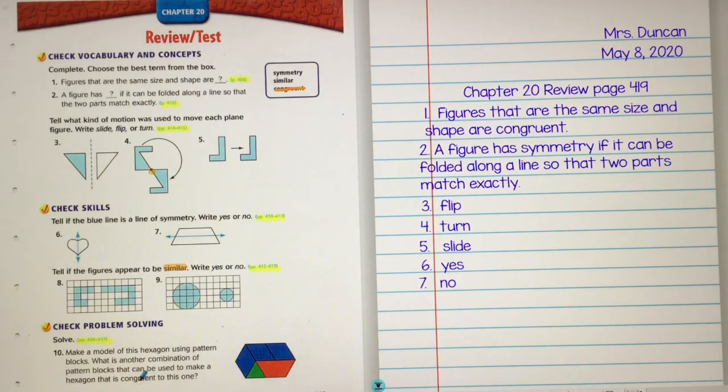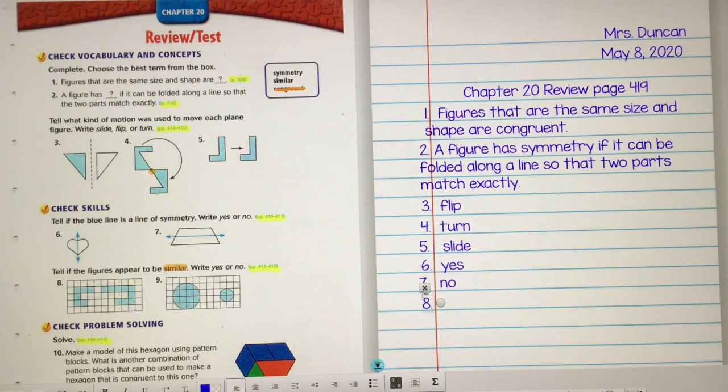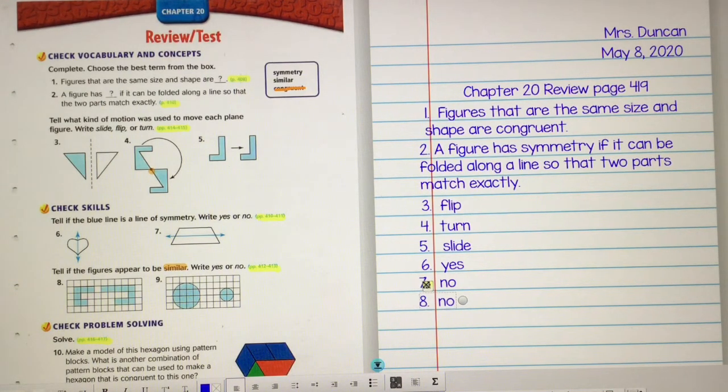So number eight, let's take a look here. So I have three on the top, one down, two on the bottom. Now this shape has three on the bottom, so it grew by one, but one in the middle, but one, two, three, four, five on the top. Well, it doesn't look like the same shape, does it? It looks like kind of the top parts, top and bottom stretched out, but the middle didn't stretch out. So number eight is no, it is not similar. Number eight is not similar because part of it's stretched, but not all of it.